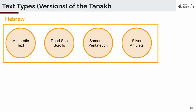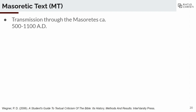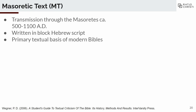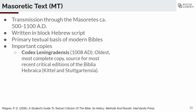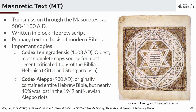Moving on to the text types of the Tanakh or Hebrew Bible — there are four in Hebrew and five important translations. We'll talk about two Hebrew versions and one important translation. The first and most significant version is the Masoretic text, named after the Masoretes, a group of scribes that transmitted the text from about 500 AD to 1100 AD. It's written in a block Hebrew script and is the primary textual basis of modern Bibles. More specifically, Codex Leningradensis — a specific copy of the Hebrew Bible dating to about 1008 AD — is the single best-attested copy of the Masoretic text.